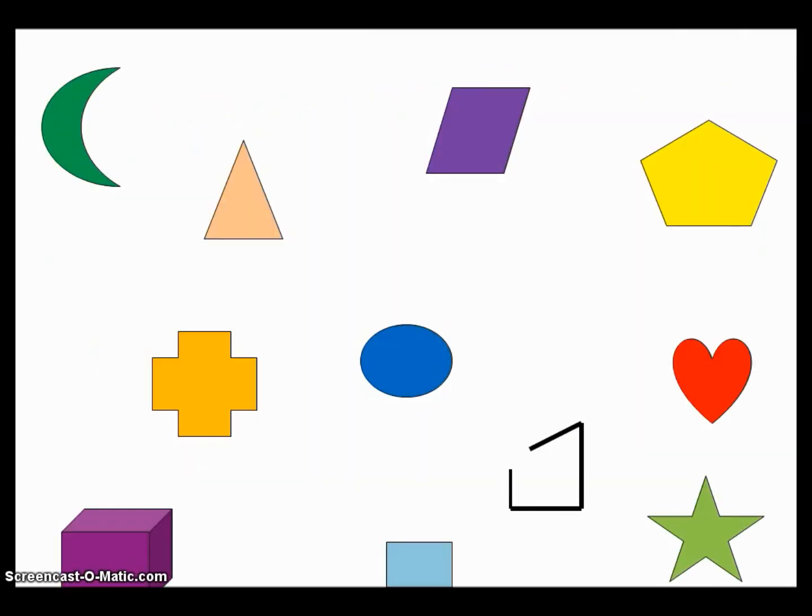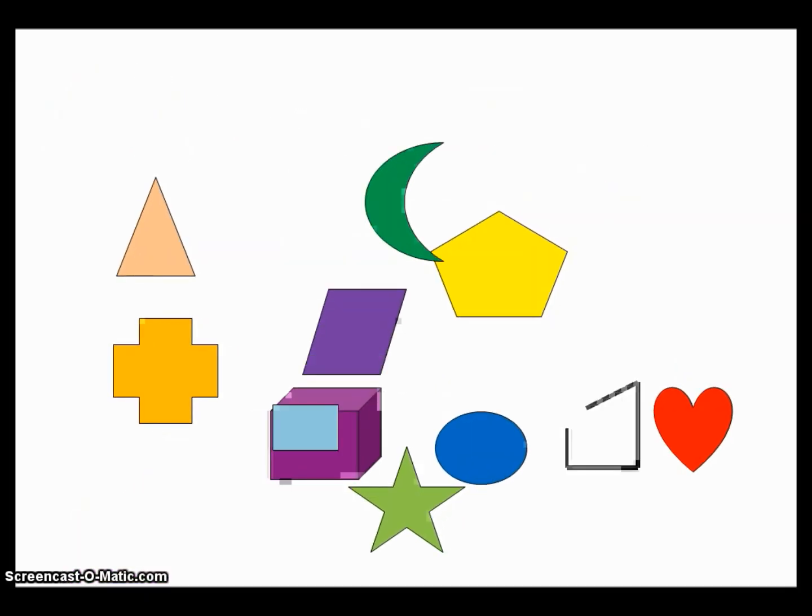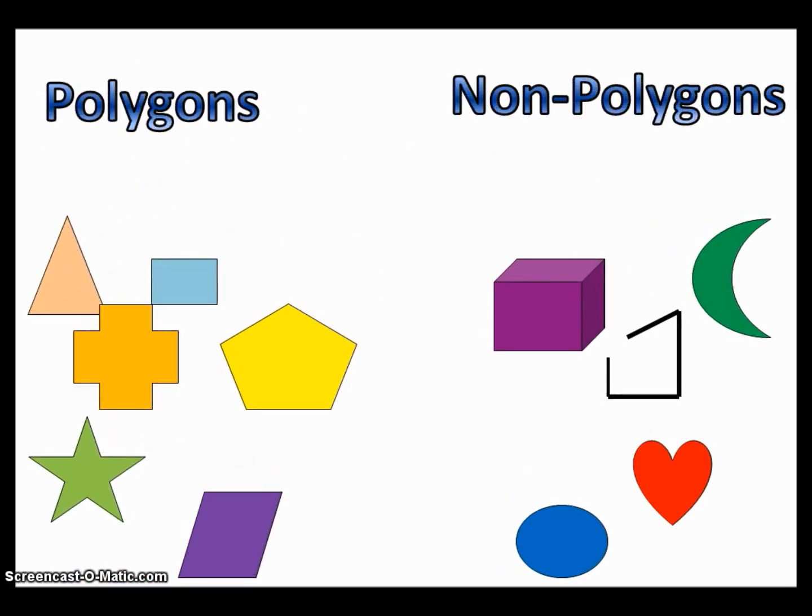But first, let's start out with some polygons. So if we sort these into polygons and non-polygons, we'll remember that polygons have two major things. One, straight sides, and two, closed figures.